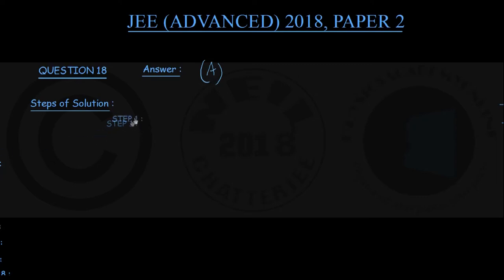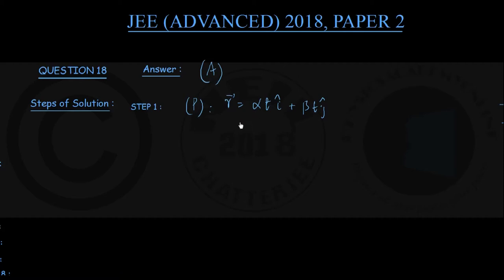In step number 1, considering the motion P, the position vector R is given as alpha·T·î plus beta·T·ĵ, where alpha and beta are positive constants, T is time, and î and ĵ are unit vectors along the plus x and plus y directions. So the velocity vector V is dr/dt, which differentiates to give alpha·î plus beta·ĵ.